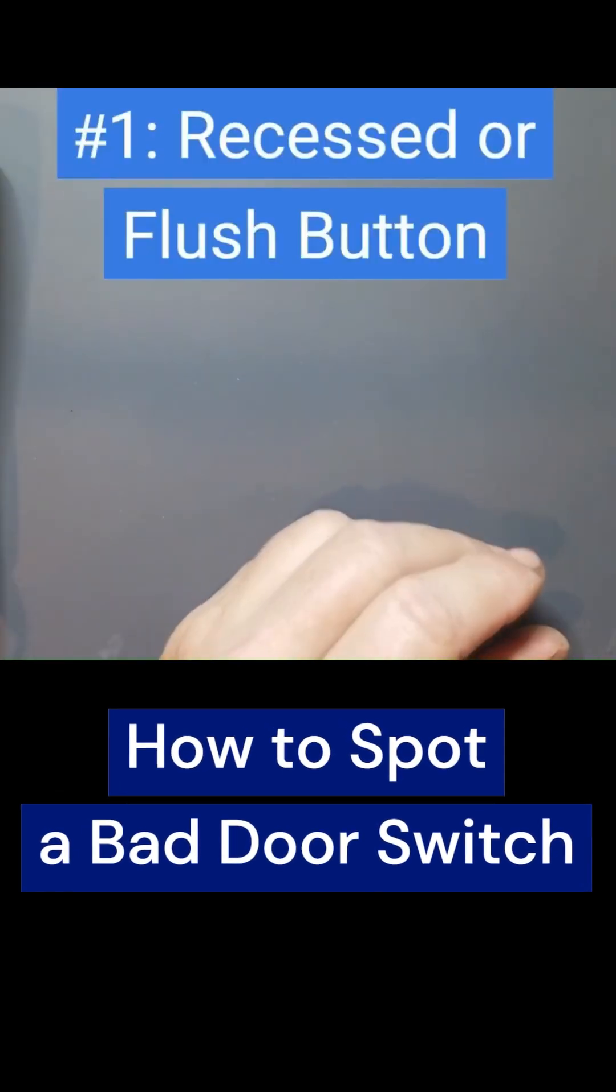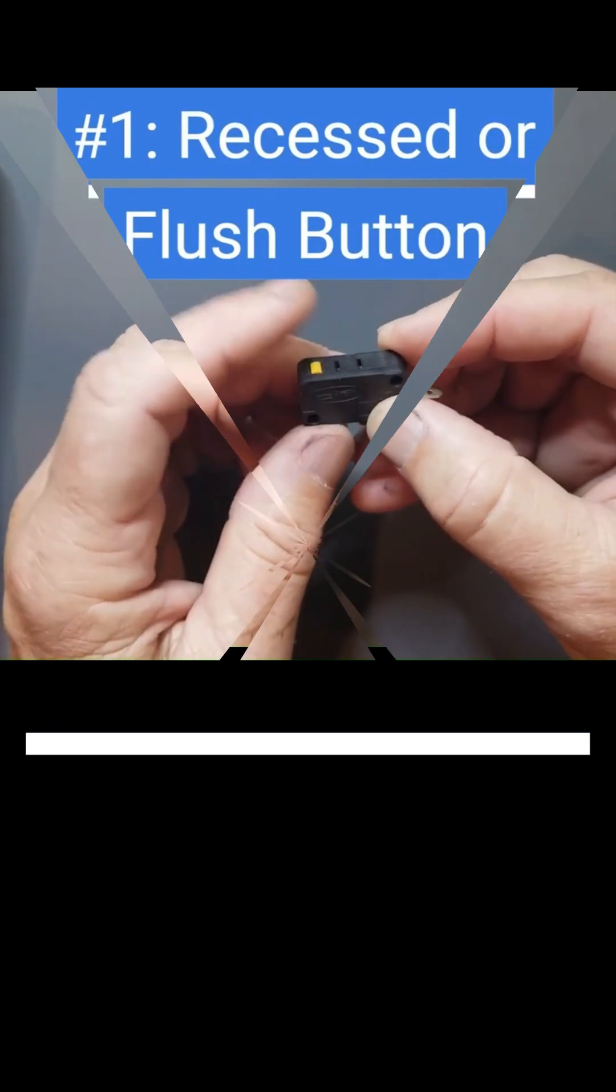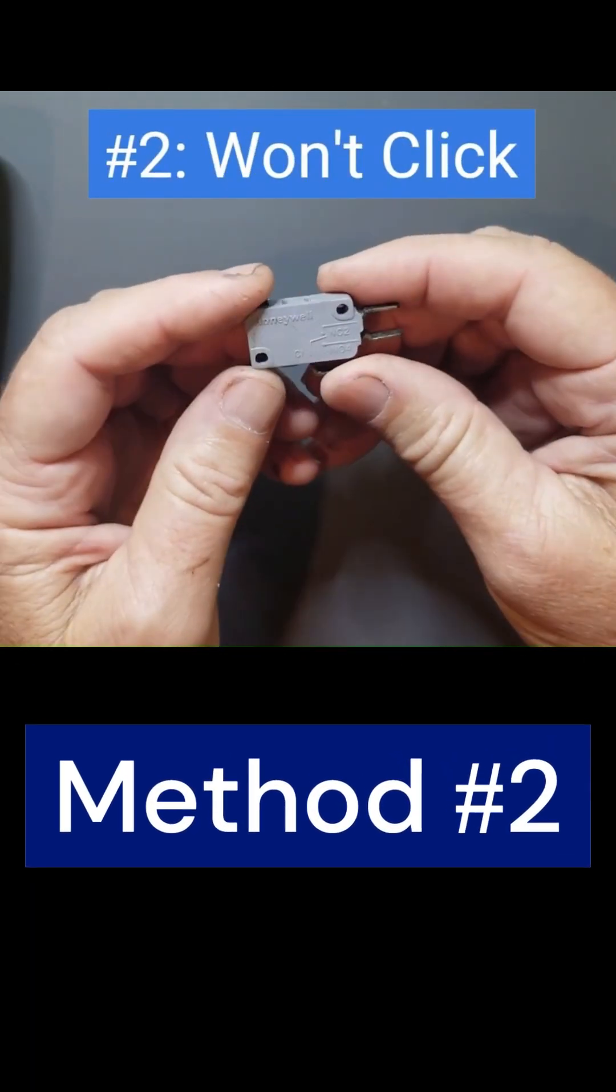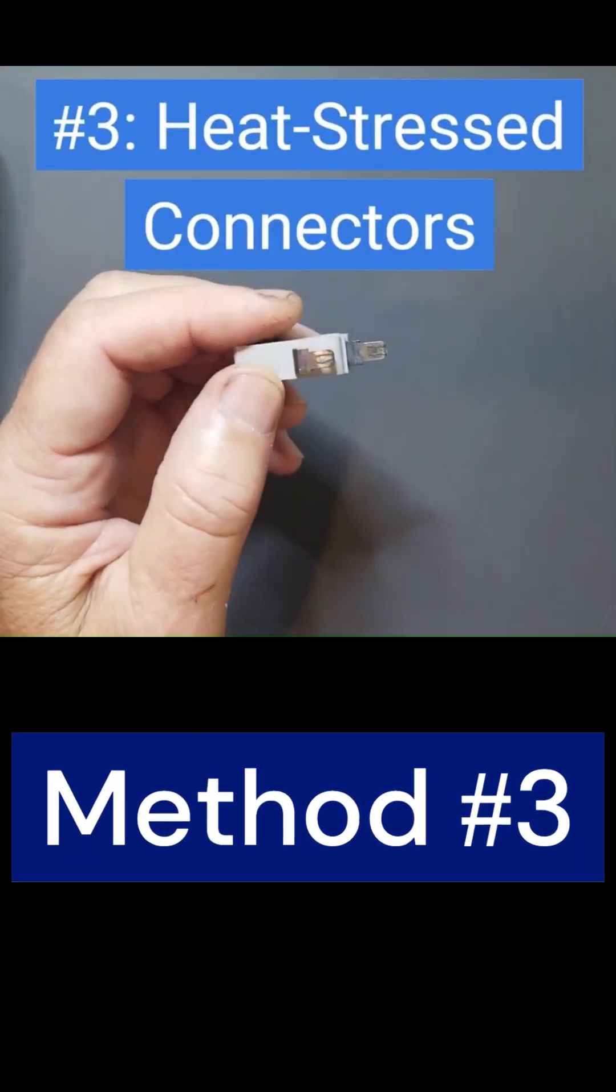Here are four quick ways to spot a bad door switch. One, if the button is stuck flush and won't press. Two, if the button presses but makes no click. Three, if you see heat stress or burn connections, replace the switch.